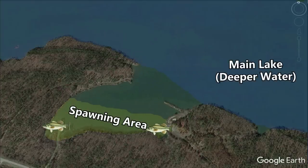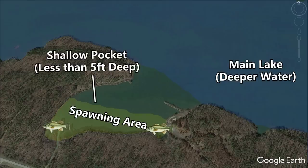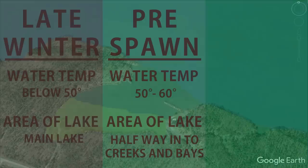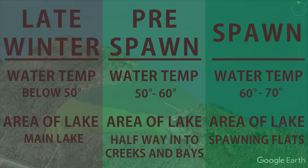Spawning areas are usually flat shallow parts of the lake in less than five feet of water. These areas are often found in the backs of creeks and bays or around large islands. There are obviously exceptions to this rule and I've caught spawning bass as deep as 10 feet of water and out on the main lake. Once water temperatures get above 50 degrees bass will make their way towards these spawning areas and will usually start making their beds when water temperatures get above 60 degrees.